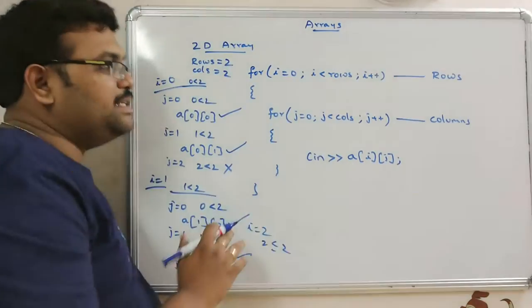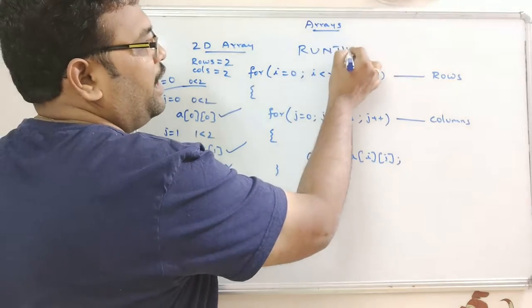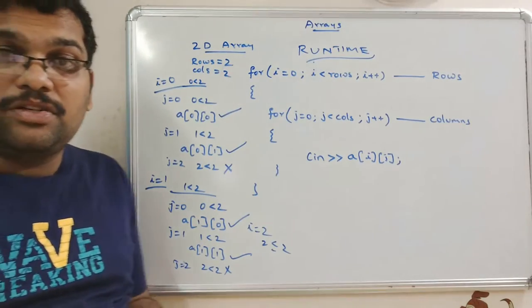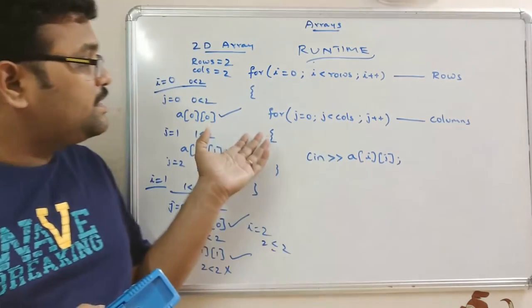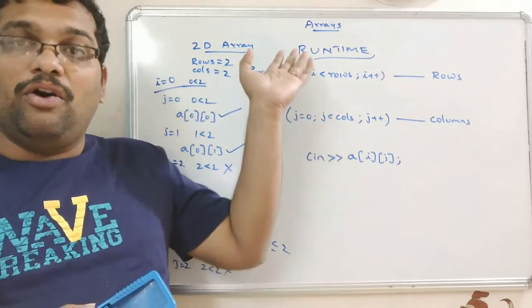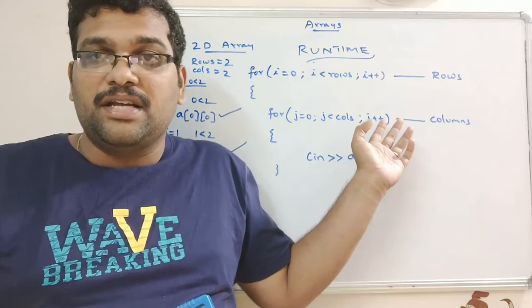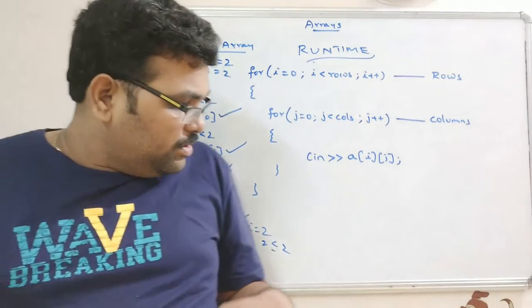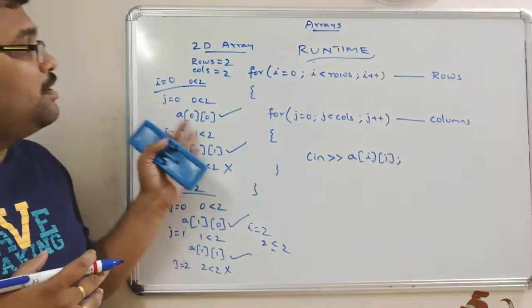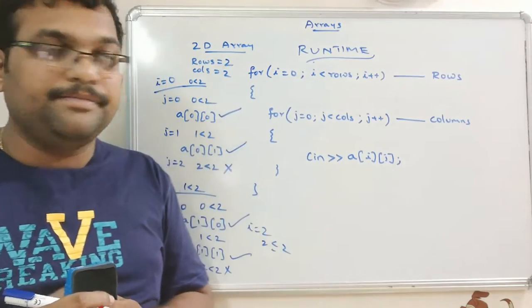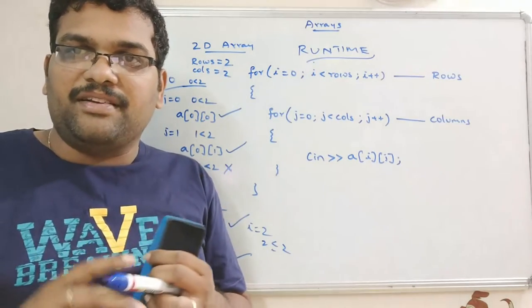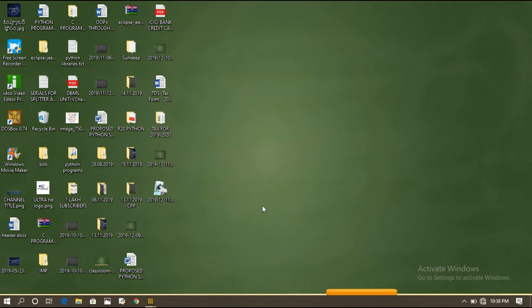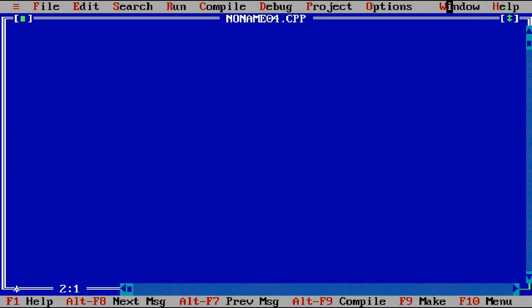This is how we initialize two-dimensional arrays at runtime. To display the elements, we also use two nested for loops — the outer loop represents rows and the inner loop represents columns. Now we will see the practical working of this two-dimensional array by executing a program in the compiler. The major application is matrix operations.